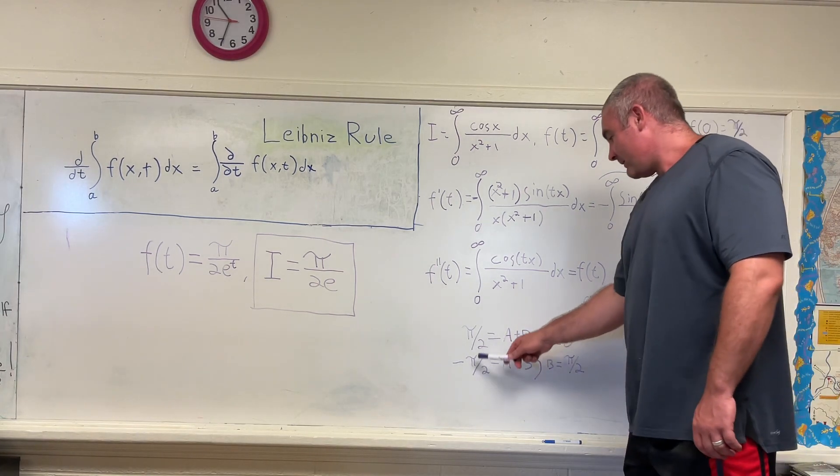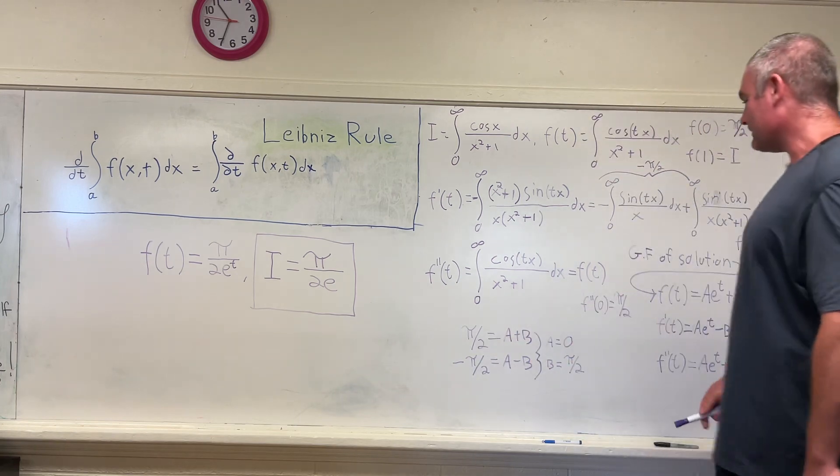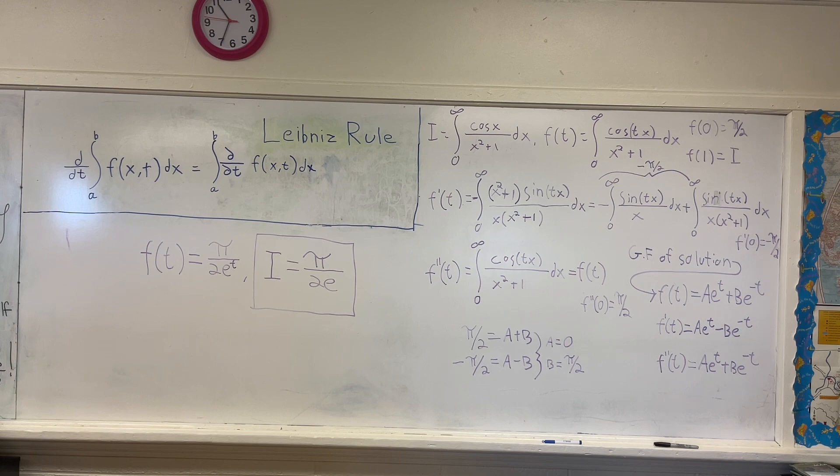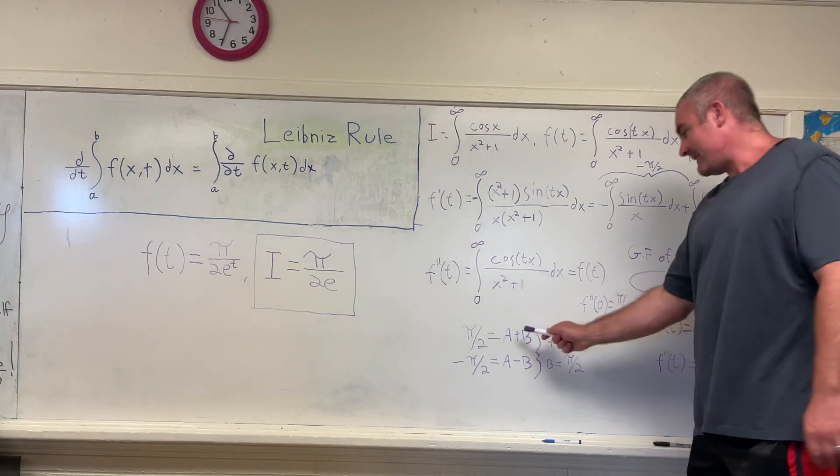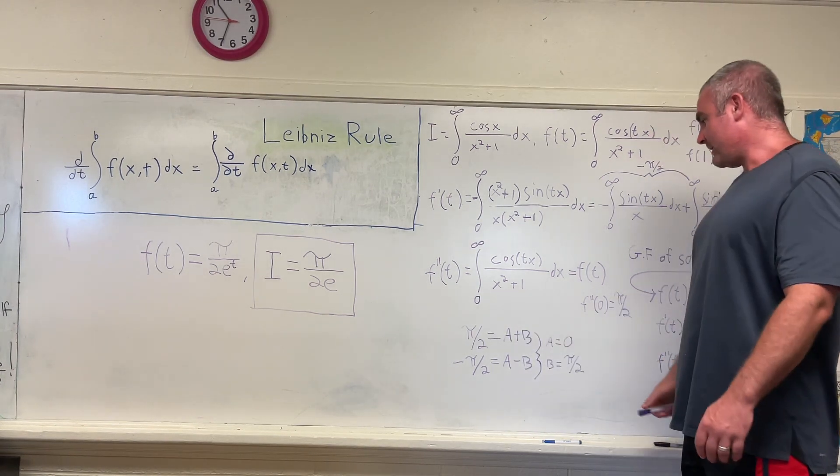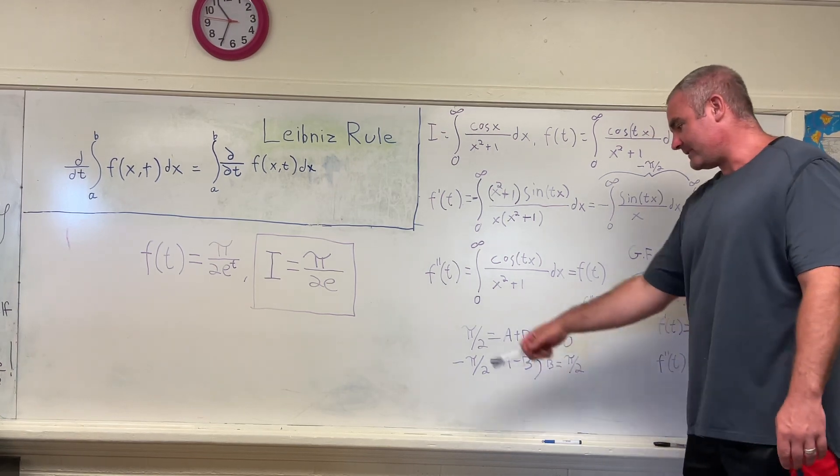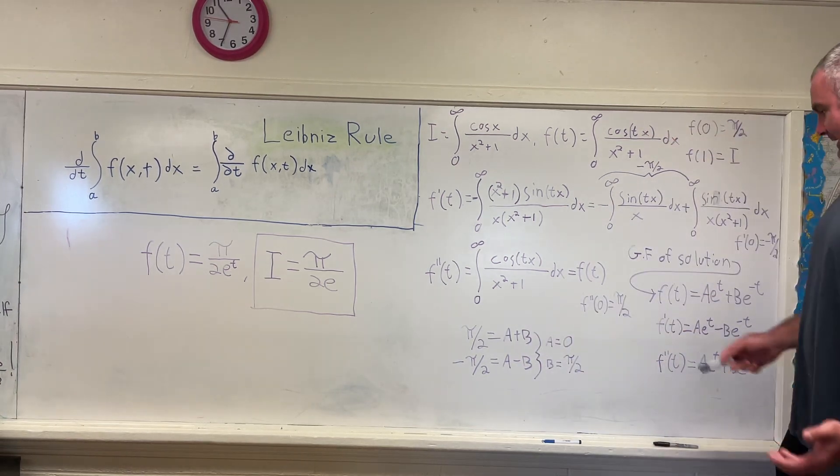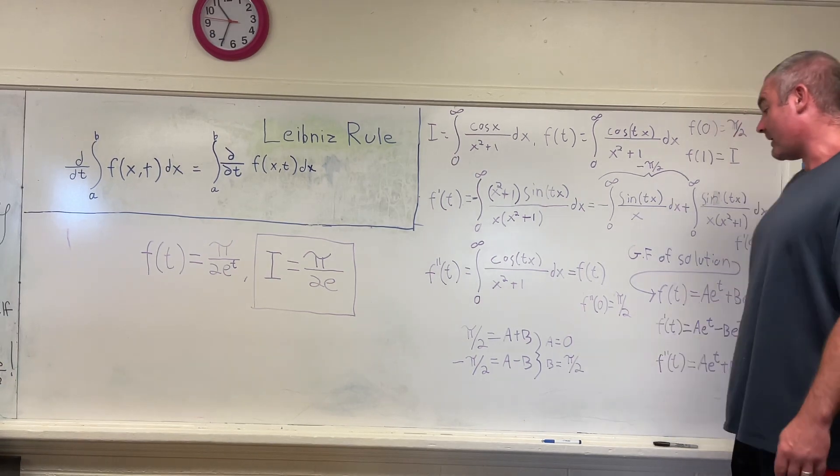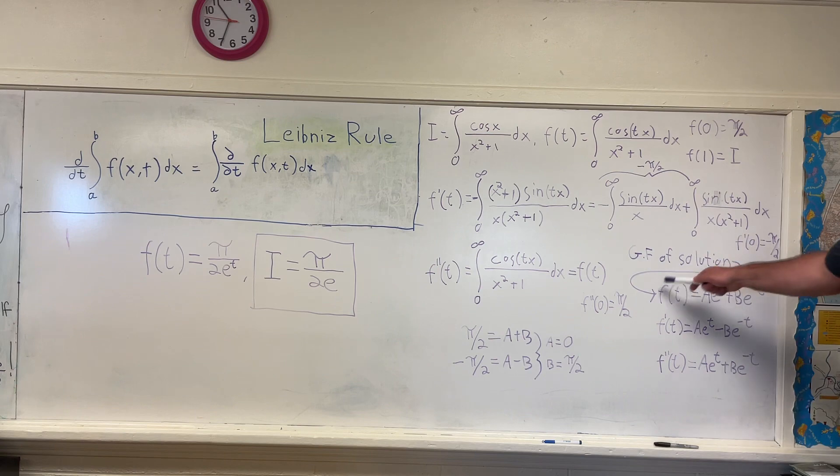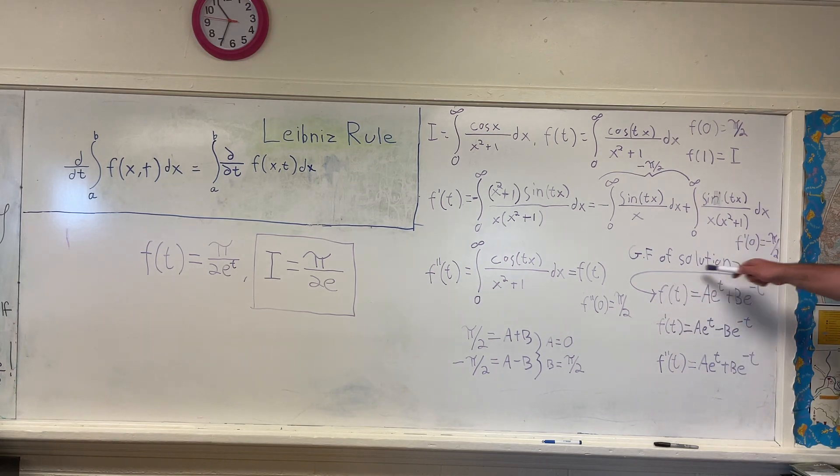And as you can see, if you add these two equations together, you'll get that 0 is equal to 2a, giving you a equals 0. And if you plug in a equals 0, you get that either b is equal to pi over 2, or that negative b is equal to negative pi over 2. And either way, you get that b is equal to pi over 2.